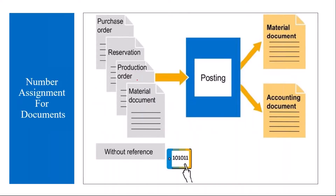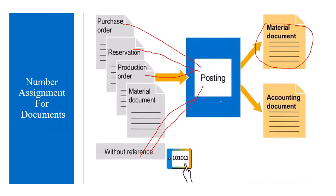Whenever we do goods received against a purchase order, or whenever we do goods issue against a reservation, or any other goods movement, the system normally generates a material document. And if it is valuation-related, it will also generate an accounting document. Each material document and accounting document is identified with a unique number, and how the system generates that number is what we will understand today in this topic.